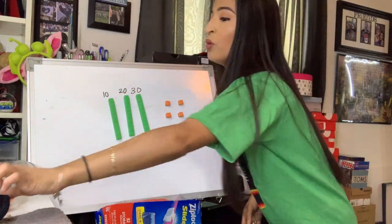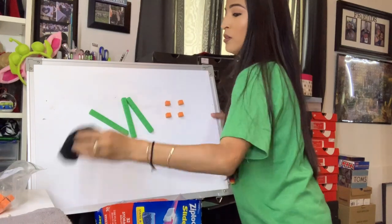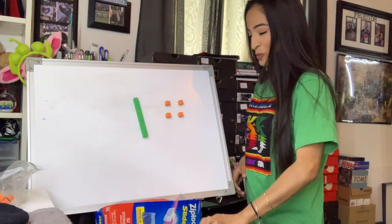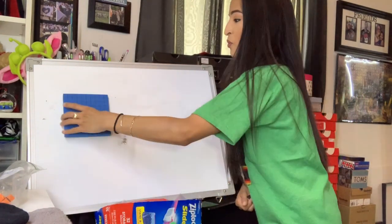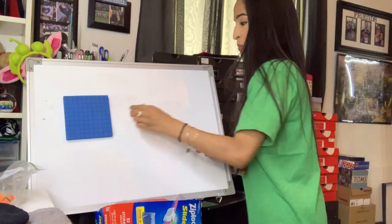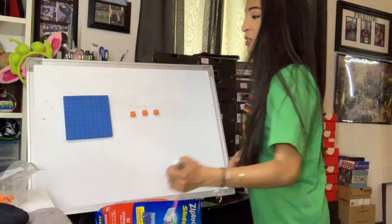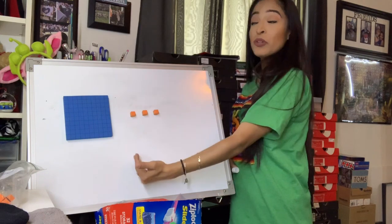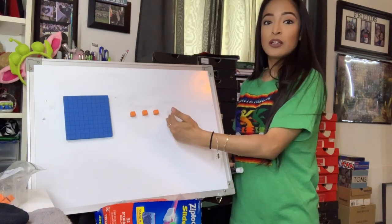Now let's do one more with the hundreds place. That way you can practice using the hundreds place. Actually, we'll do two more with the hundreds place. Let's start off with one flat, no longs, but three units. So what happens here? We have a hundreds place, but we do not have a tens place, but we do have a ones place.